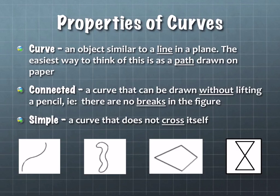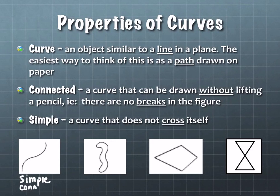The first one — how would you categorize it? It is simple. We're looking at connected, closed, and simple. This one is simple. Is it connected? Yes, it is. Connected means I don't have to pick up my pencil to draw it. Is it closed? No. So this is a simple, connected, non-closed curve.